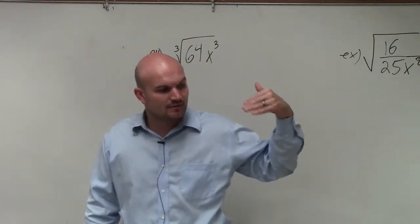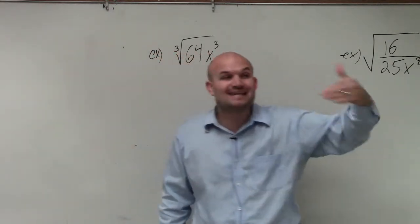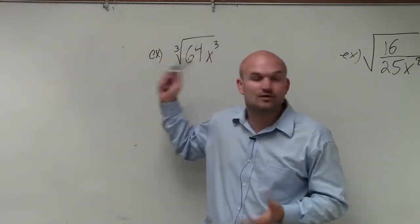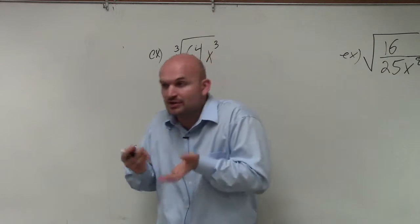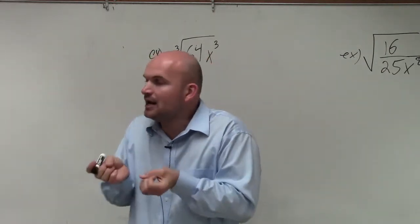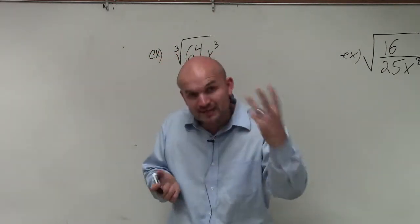Basically, what the cube root is asking is: what number multiplied by itself gives us 64? What cube root means is a number multiplied by itself three times.